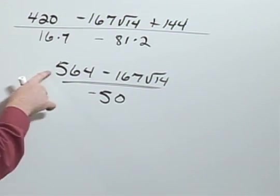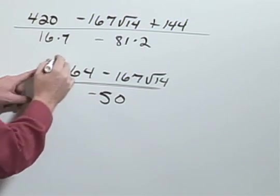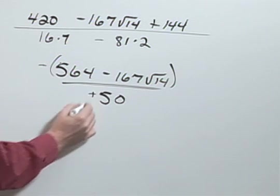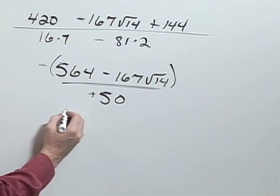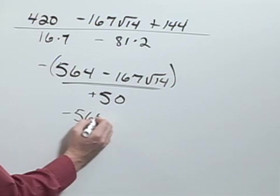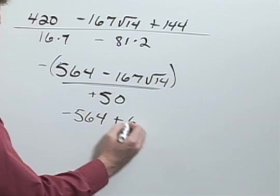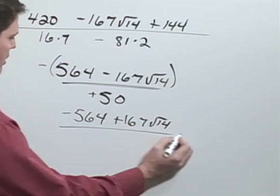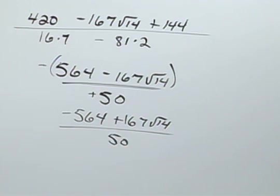I don't want to have the negative on the bottom, so I can actually move that to the top and then distribute that throughout. So my final answer would be negative 564 plus 167 square root of 14, all over 50.